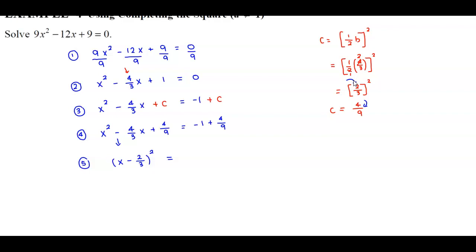Now we combine the values on the right side. Negative 1 is the same as negative 9 over 9, so that we can add the fraction 4 ninths. Negative 9 ninths plus 4 ninths gives us negative 5 over 9.